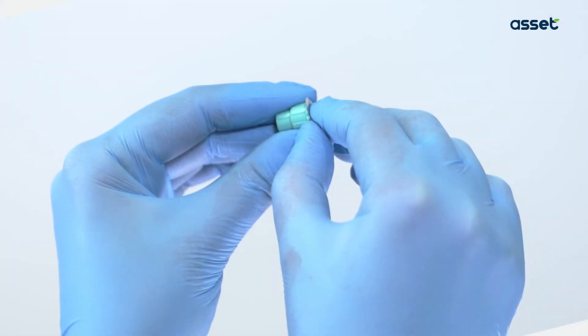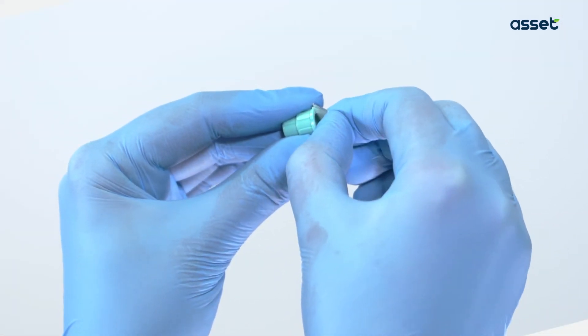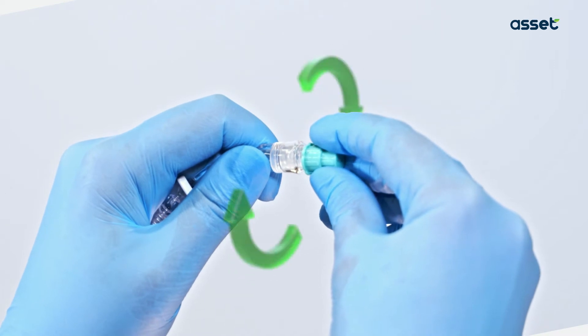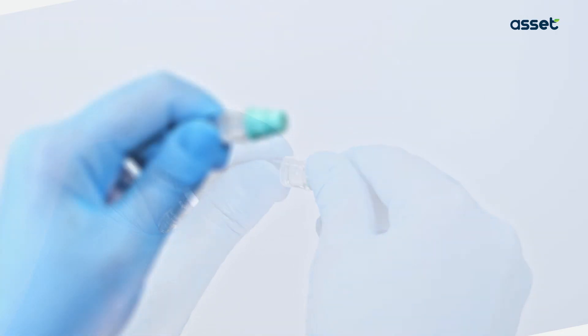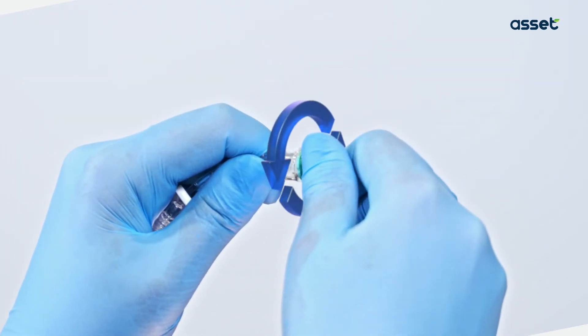To use the SwabArt disinfecting cap, peel it easily from the foil, gently attach it to needleless connector, push and twist clockwise in place. In order to access the needleless connector, simply remove the cap by turning it counterclockwise.